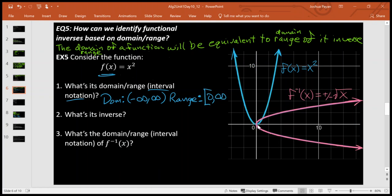That's a square bracket on the lower bound because we actually get there, and that's a curve bracket on the upper bound because we never actually reach infinity. Now let's look at the domain and range of its inverse.